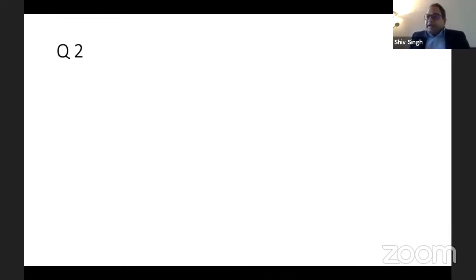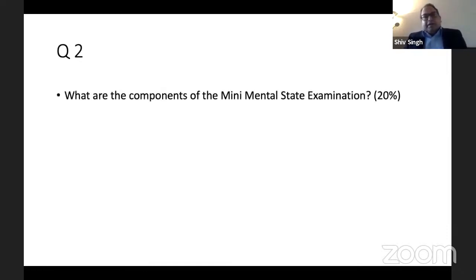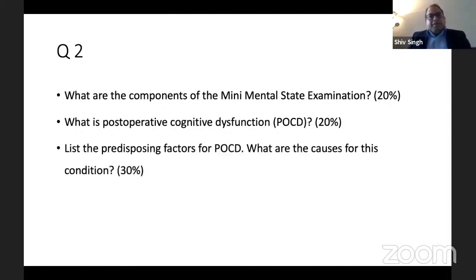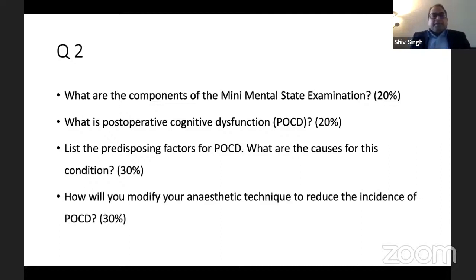That was our first question. Coming to the second question on POCD. The first part is: what are the components of the mini-mental state examination (MMSE)? — worth 20%. What is postoperative cognitive dysfunction? — another 20%. List the predisposing factors for POCD and the causes — 30%. And how will you modify your anesthetic technique to reduce the incidence of POCD? — 30%.